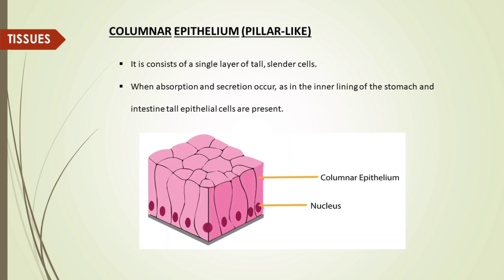Columnar epithelium looks like a pillar. It consists of a single layer of tall, slender cells. When absorption and secretion occur, as in the inner lining of the stomach and intestine, tall epithelial cells are present.